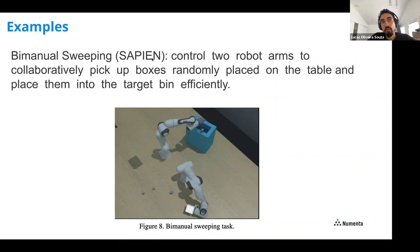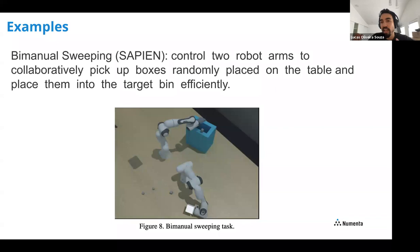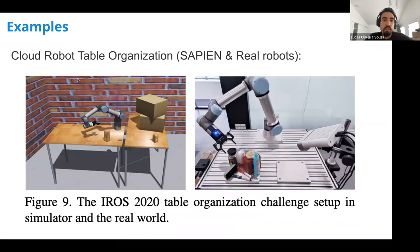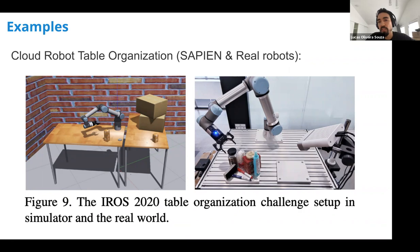The authors provide several example implementations. One simple example is manual sweeping: you control two robot arms to collaboratively pick up boxes randomly placed on a table and place them in a target location, implemented in the SAPIEN environment — similar to interactive Gibson discussed previously.